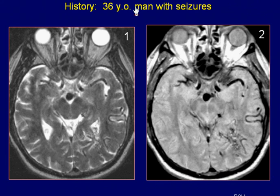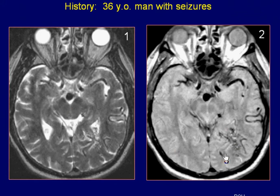A 36-year-old man with seizures. Axial T2 and proton density-weighted images of the brain reveal prominence of the distal basilar artery. A serpentine lesion is seen in the left parietal region.